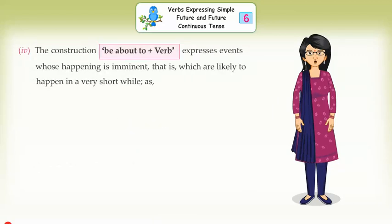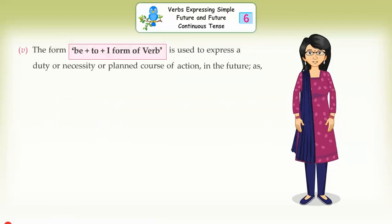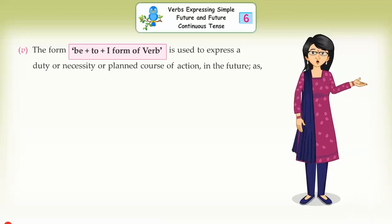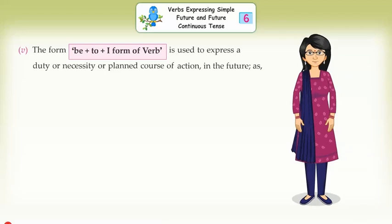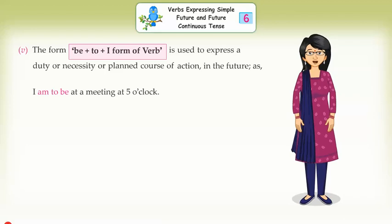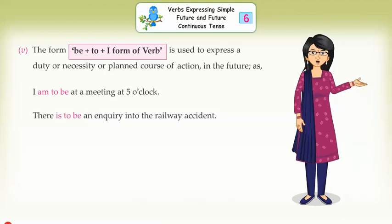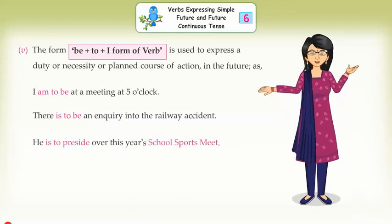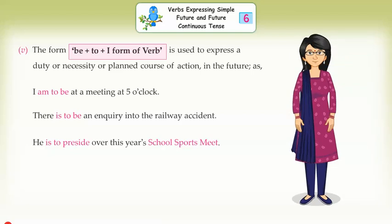Fourth, the construction 'be about to' + verb expresses events whose happening is imminent — likely to happen in a very short while: The train is about to leave. The chief minister is about to speak. Fifth, the form 'be + to + first form of verb' is used to express a duty, necessity, or planned course of action in the future: I am to attend a meeting at five o'clock. There is to be an inquiry into the railway accident. He is to preside over this year's school sports meet.